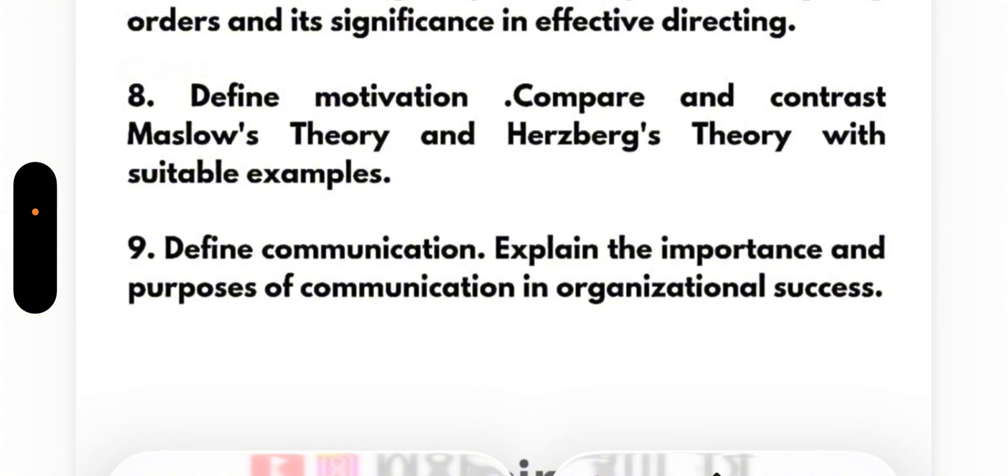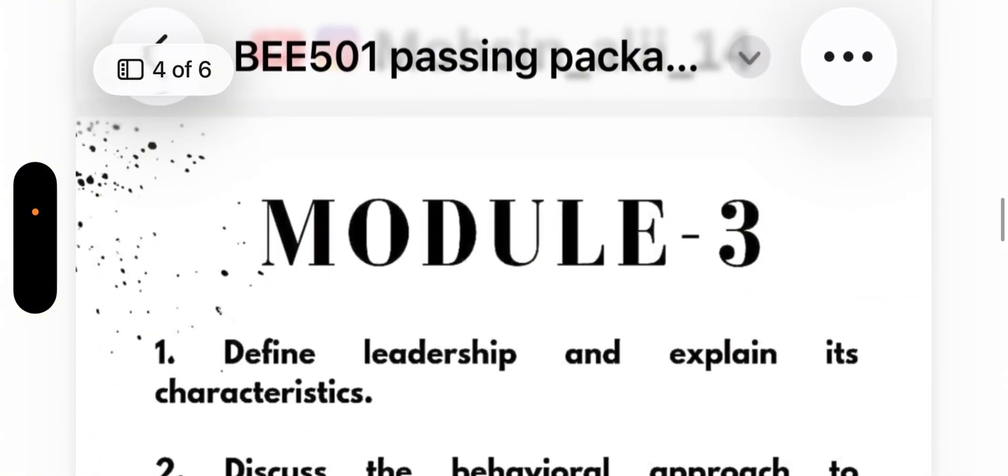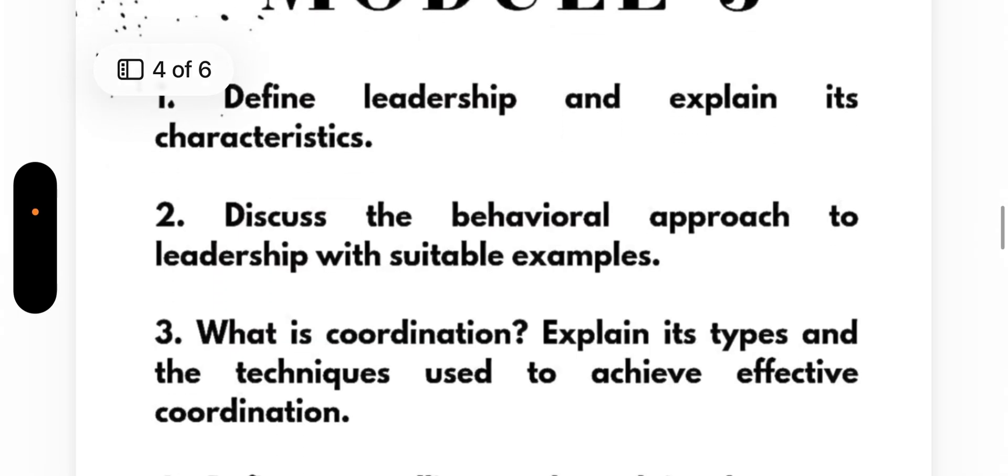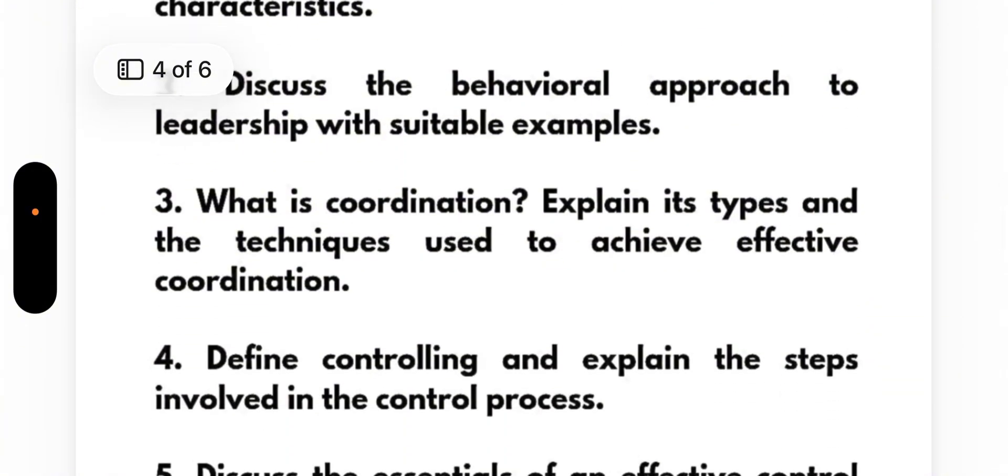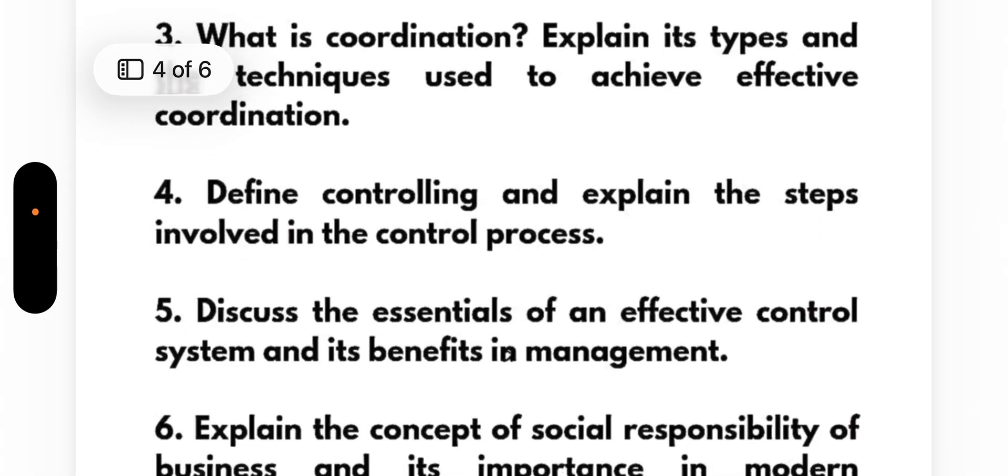Module 3: Define leadership and explain its characteristics. Discuss the behavioral approach to leadership with suitable examples. What is coordination? Explain its types and the techniques used to achieve effective coordination. Define controlling and explain the steps involved in the control process. Discuss the essentials of an effective control system and its benefits in management.